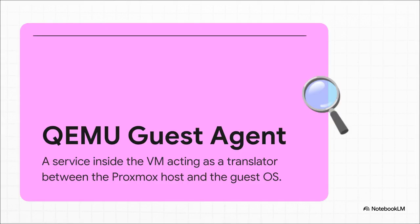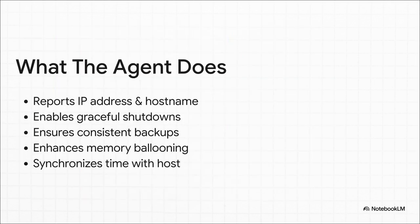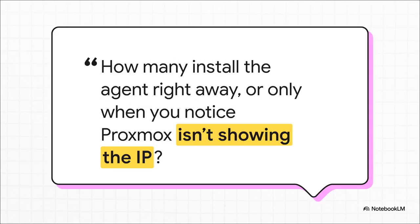So what is this agent exactly? The easiest way to think about it is like a translator. It's this tiny little service that you install inside your VM's operating system. It opens up a direct line of communication, which lets the Proxmox host politely ask the VM things like: hey, what's your IP address? Or: could you please shut down cleanly now? And the moment you install it, the payoff is huge. All those weird symptoms we just talked about? Gone. The IP address magically shows up in the Proxmox UI. Shutdown commands actually work gracefully. Proxmox can now tell the VM to freeze its file system for a second before a backup, which gives you perfect, consistent copies. It is the key to making your VMs feel like first-class citizens in your Proxmox setup.